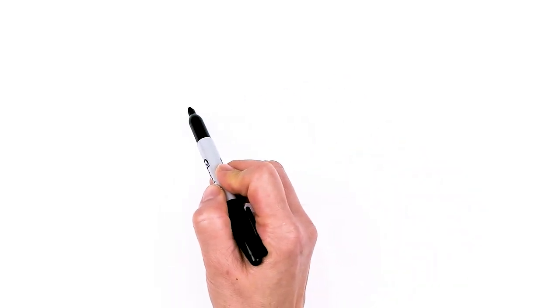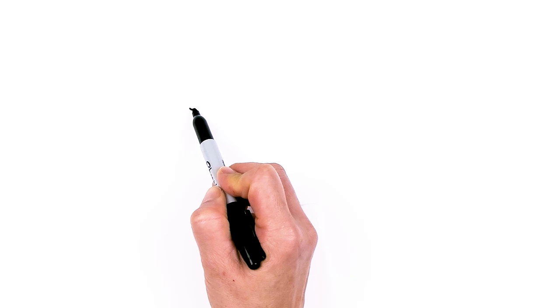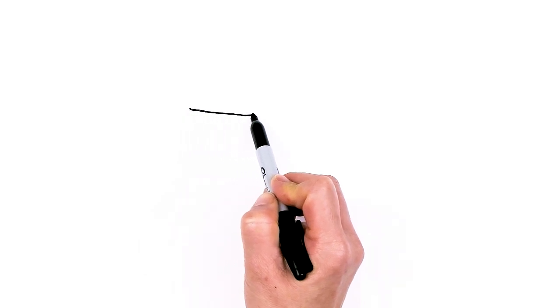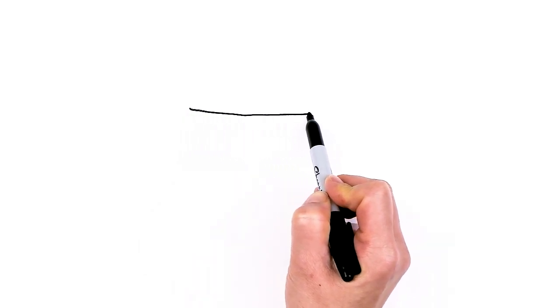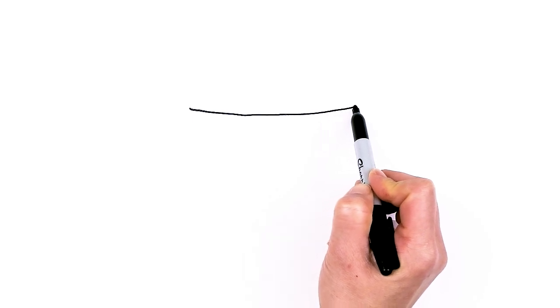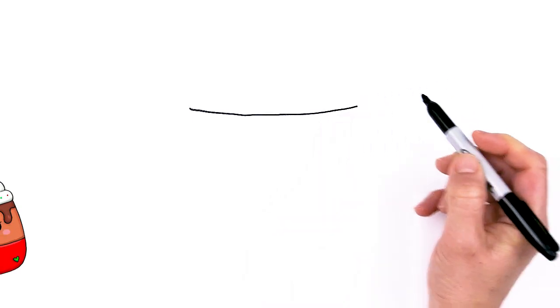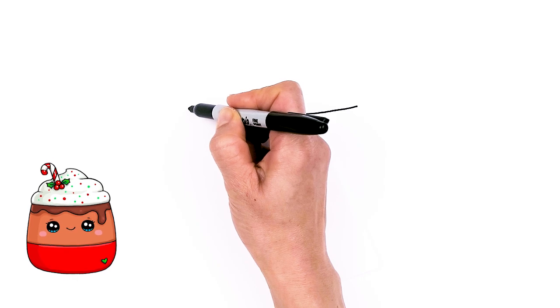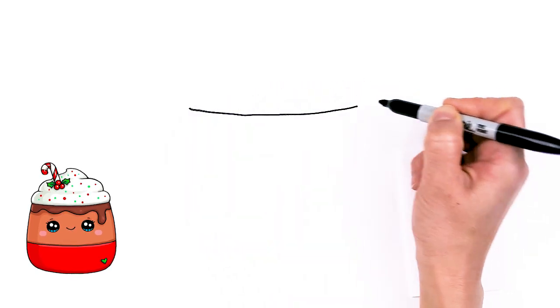To draw this very yummy cup of hot cocoa, let's first start by drawing a shallow curve at the top. So I'm going to come right about here and I'm just going to go across the width of my cup. So let's say about right here, I'll stop. Nice big curve at the top and this curve is going to determine the width of your cup.